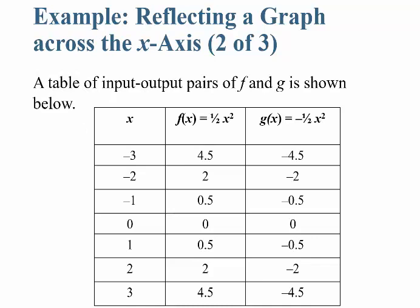You're going to put in some values for x into both f of x and g of x. The only difference is that g of x has a negative sign. For example, plug in negative 2 squared: that's 4 times 1 half is 2 for f of x. Same over here — negative 2 squared is 4, but times minus 1 half gets you negative 2.